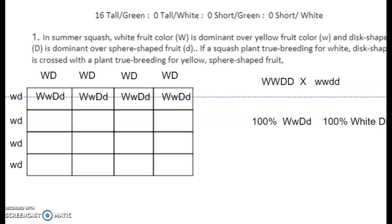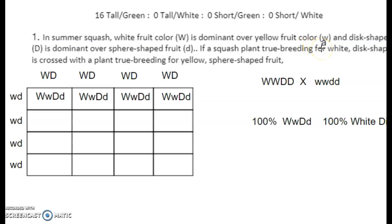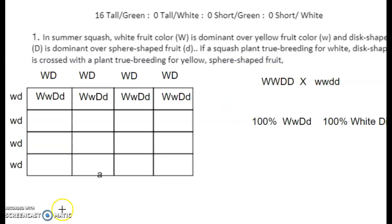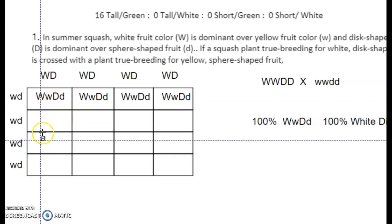If it's true-breeding for white disc-shaped, and white here is the recessive trait, it would be little w little w. But wait — disc-shaped is dominant (big D). The plant showing two recessive traits would be homozygous recessive: little w little w, little d little d.